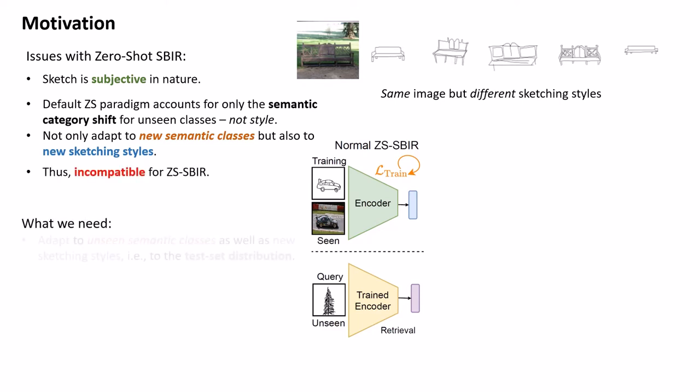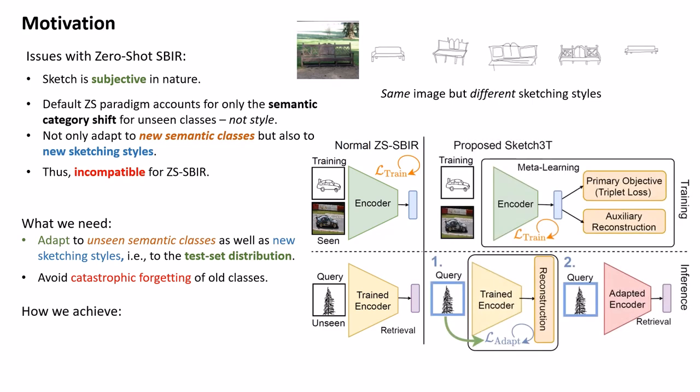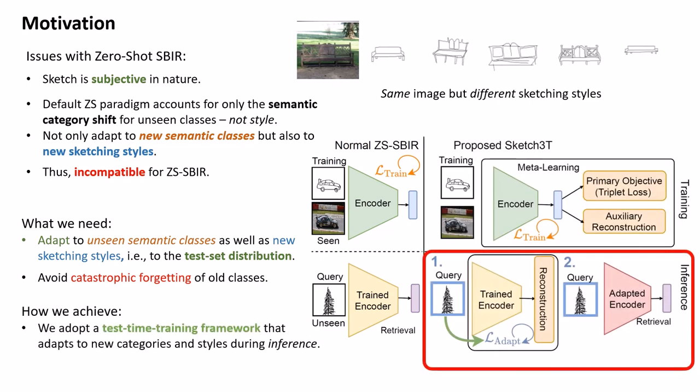Hence, we need to figure out a way to adapt to different distribution of input sketches as well, or in other words, to the entire test set distribution. We also need to remember the old knowledge learned from training on seen classes. We intend to achieve this by designing a framework that performs test time training to adapt to the test set distribution on the pre-trained model during inference. The main challenge here is the absence of corresponding labels during inference. Exploiting the vector information in sketches, we thus perform sketch raster-to-vector translation as an auxiliary task to update the model.